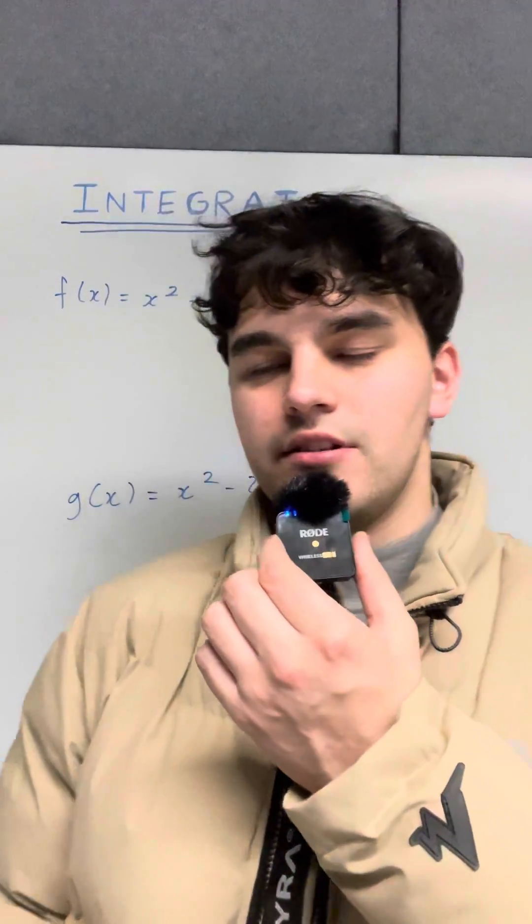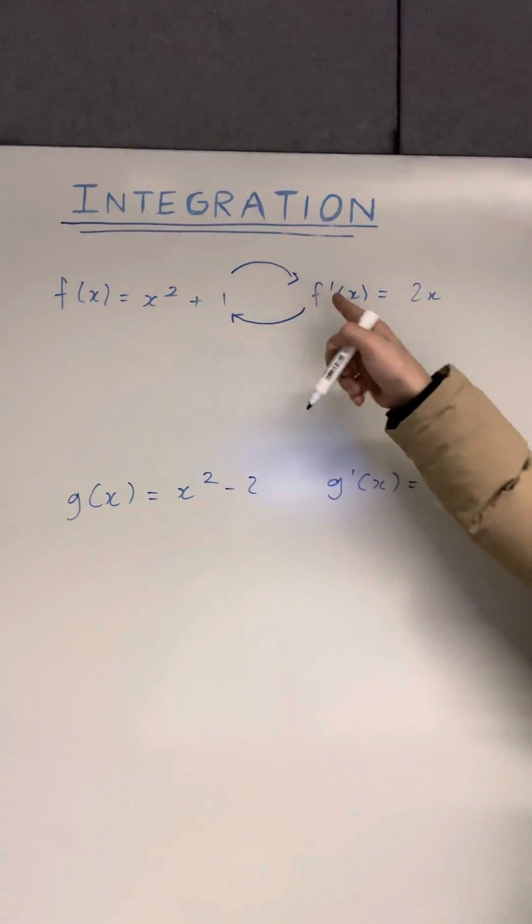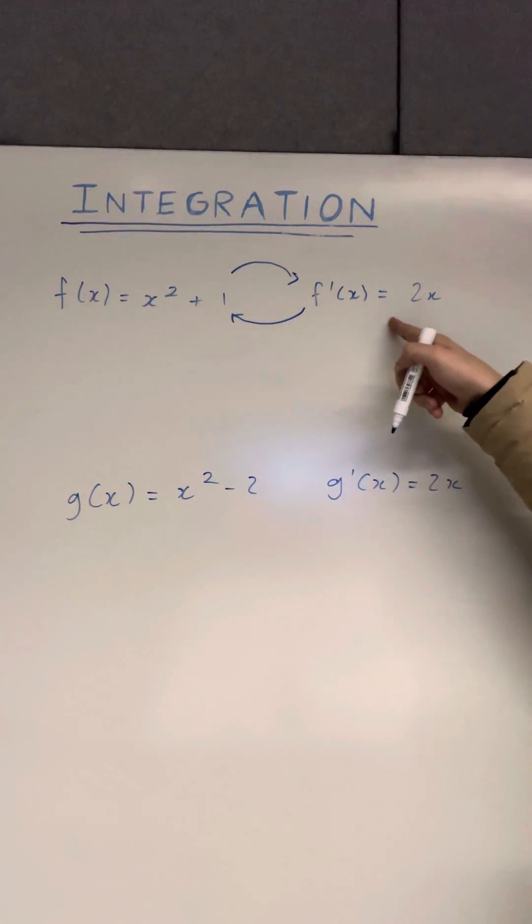Here's integration for VCE methods in less than a minute. So here we have f of x is equal to x squared plus one. If we differentiate this, we get f dashed of x is equal to two x.